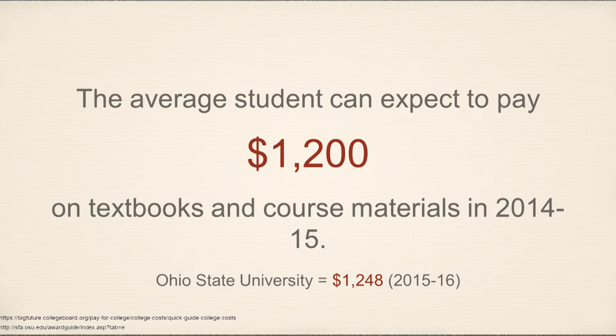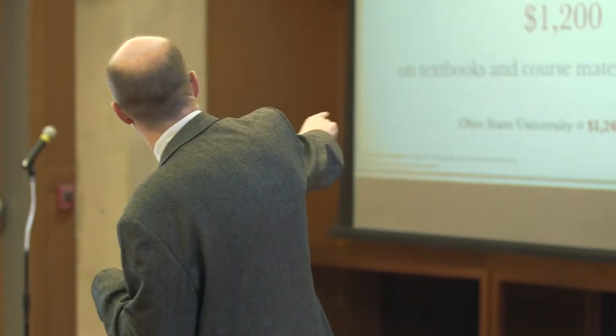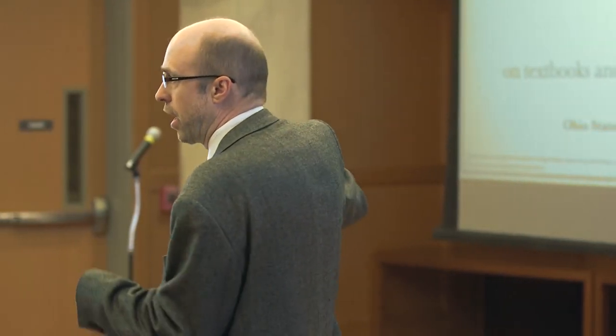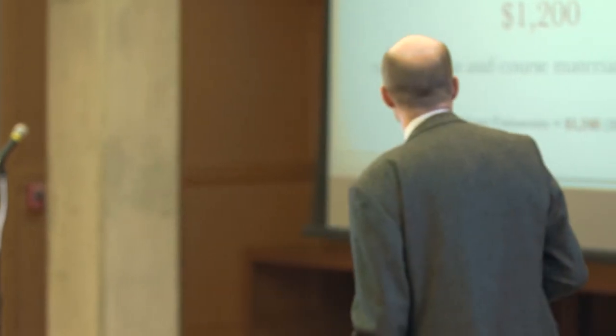The College Board estimates that students spend about $1,200 a year on textbooks. Most students probably don't actually spend that much — they're asked to spend that much. What do they do instead? They don't buy them. Every institution is required by federal law to have an estimated cost of attendance published on their website. Ohio State has it listed right along the average. The University of Minnesota is close at about $1,100. If you're from a school that focuses on science and engineering, it's closer to $2,000.